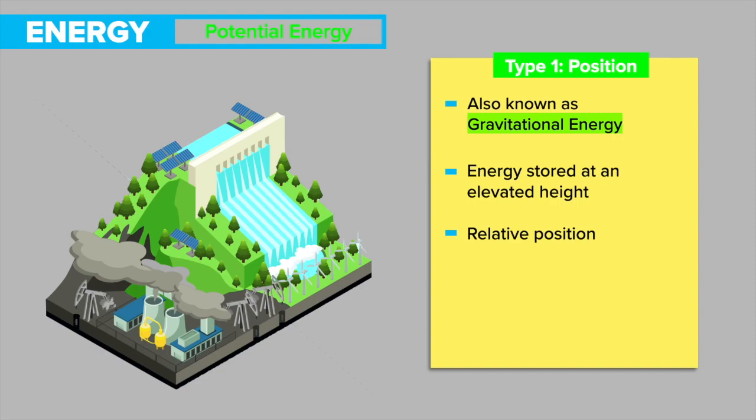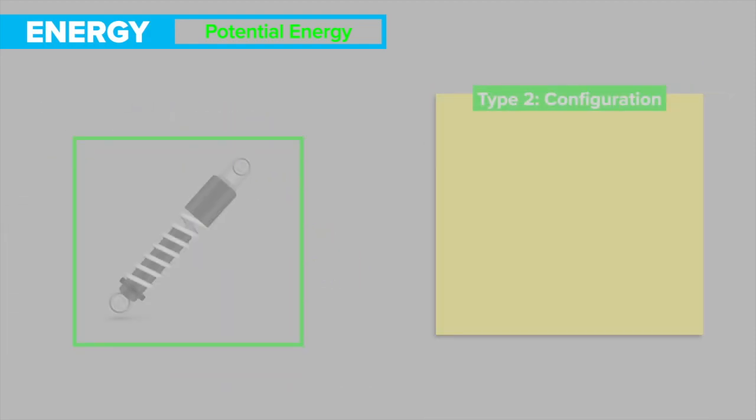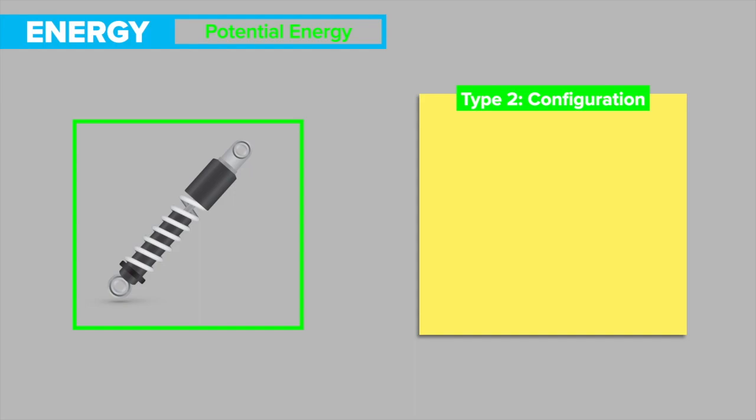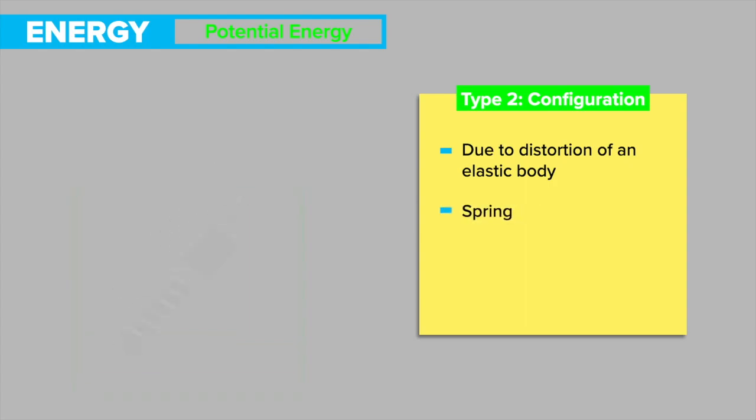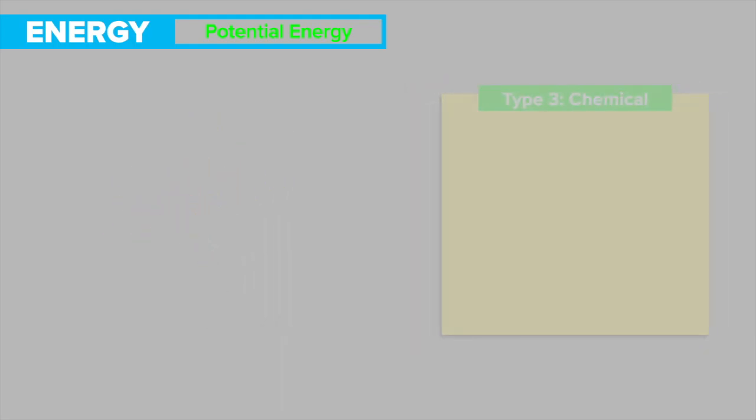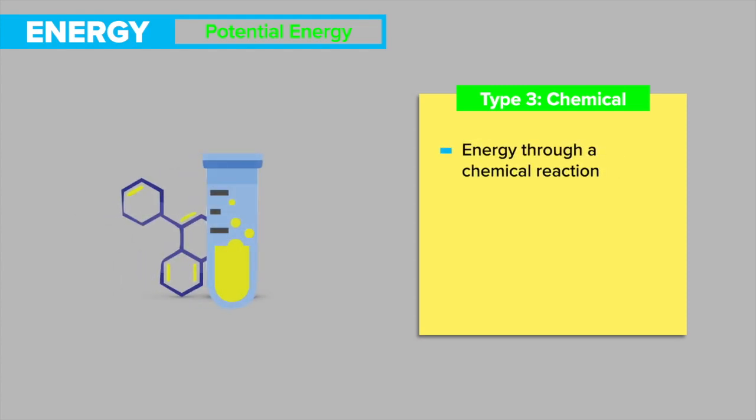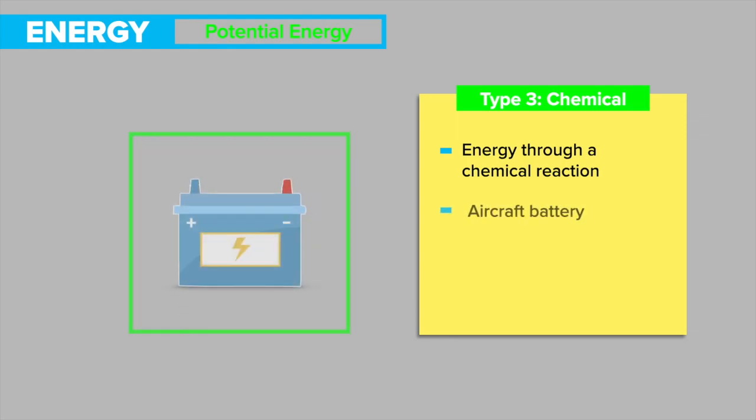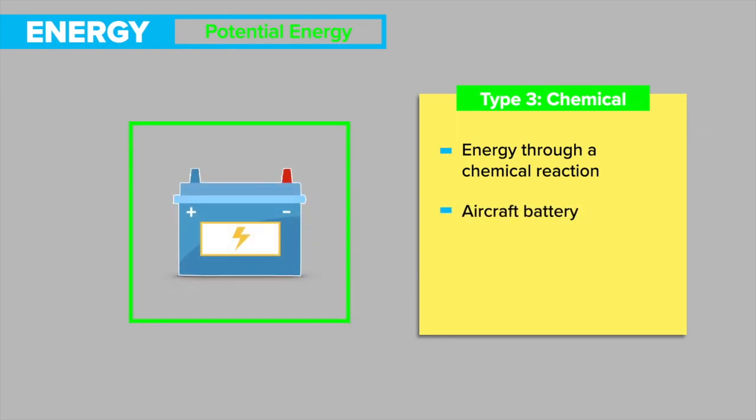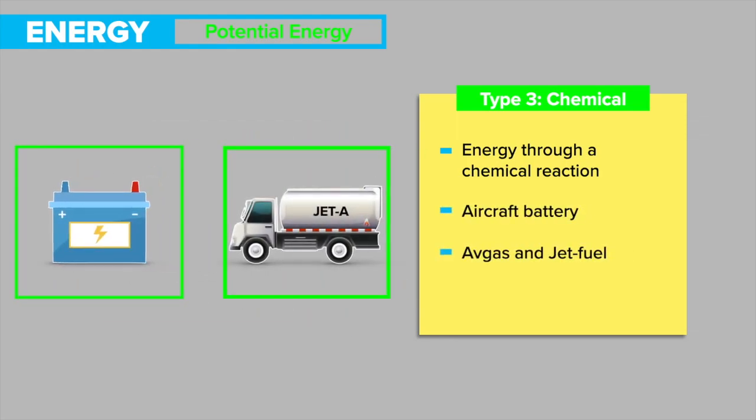Type 2: configuration. Configuration is potential energy due to distortion of an elastic body, such as a spring on a shock strut or a rubber band on a slingshot. And lastly, type 3: chemical. Chemical potential energy is energy through a chemical action, such as chemical energy stored in an aircraft battery or chemical energy stored in both avgas and jet fuel.